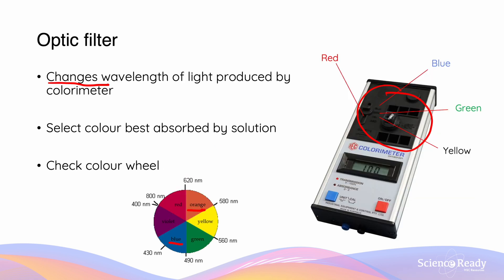Looking here, we see that the frosted faces — or in this case the waved faces — of this cuvette are facing the y-direction. This is because the light is going to be traveling through in the x-direction on the colorimeter.